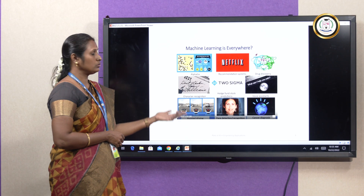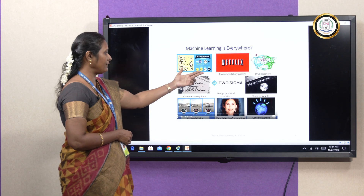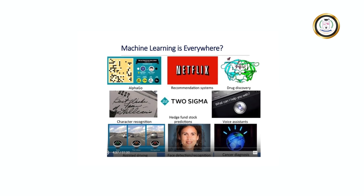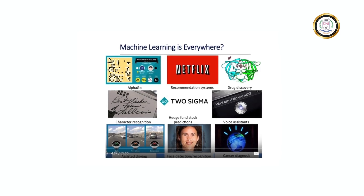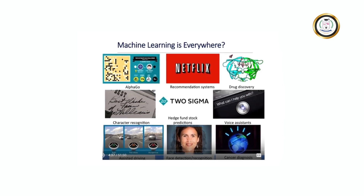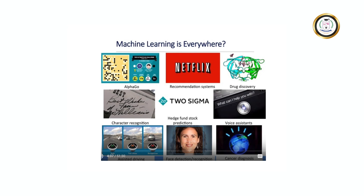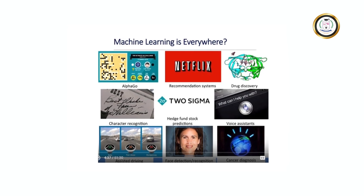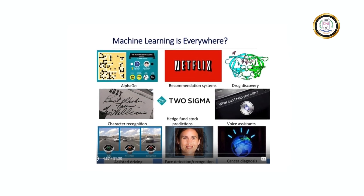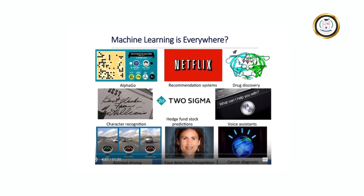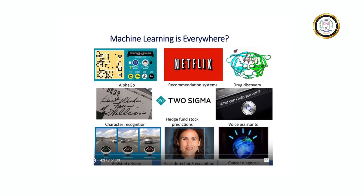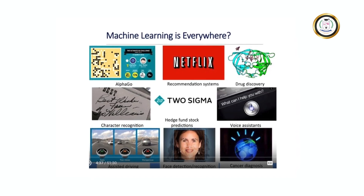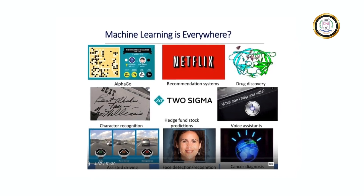Wherever we go — Netflix, all recommendations — in drug discovery, AlphaGo gaming, character recognition, and voice assistance, the background processing is machine learning algorithms. These are all a few of the applications where we can deploy machine learning.